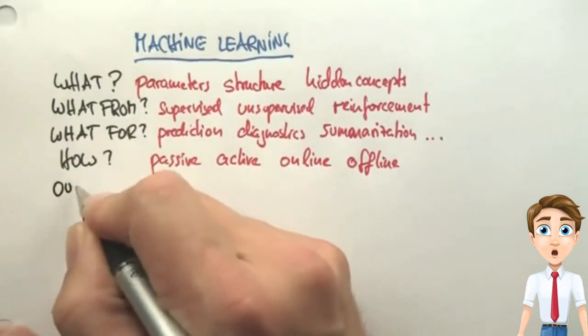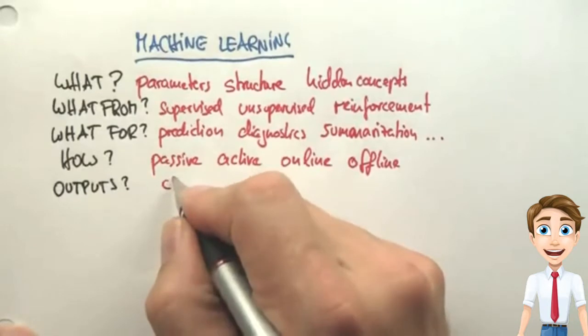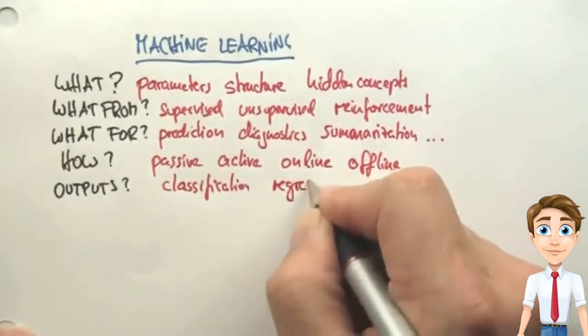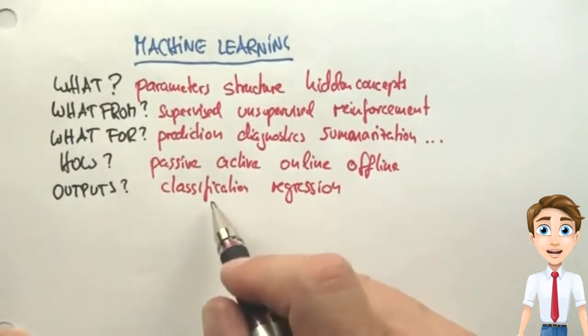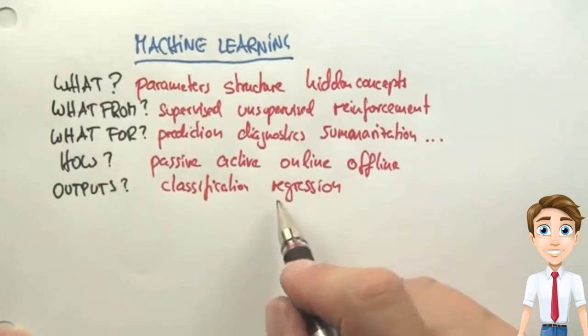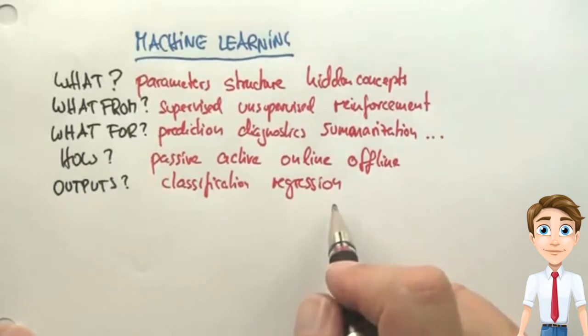There's different types of outputs of a machine learning algorithm. Today we'll talk about classification versus regression. In classification, the output is binary or a fixed number of classes. For example, something is either a chair or not. Regression is continuous. The temperature might be 66.5 degrees in our prediction.